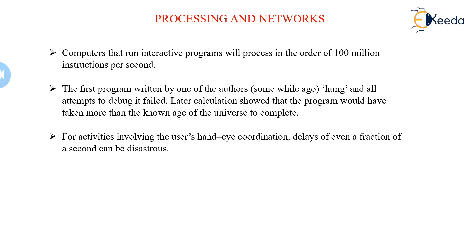This is how your brain processes information. For activities involving hand-eye coordination, even a fraction of a second delay is significant — because one second is very important in animation and multimedia. Every second of video must be rendered smoothly, and if you want to broadcast video, every second matters without delay.